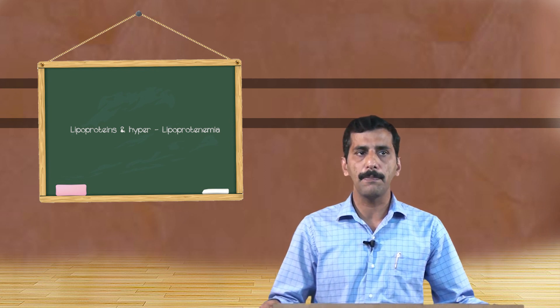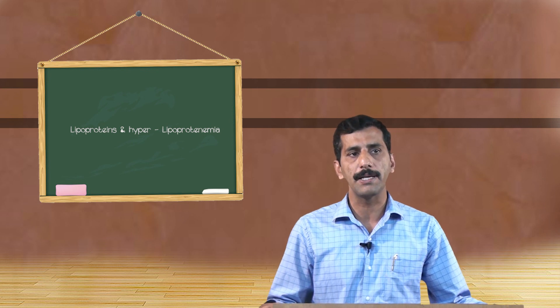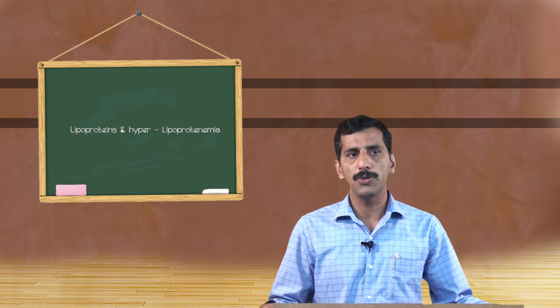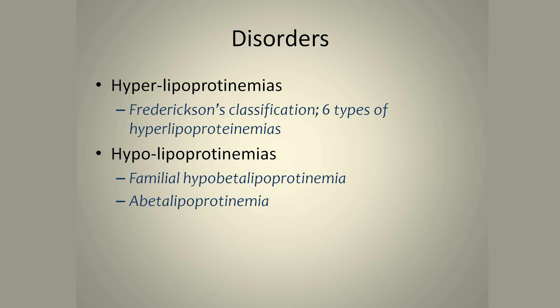In contrast to hyperlipoproteinemia, there is hypolipoproteinemia. There are two different types: familial hypo-beta lipoproteinemia and abetalipoproteinemia. Familial hypo-beta lipoproteinemia is due to the deficiency or decreased production of ApoB, which is required for the formation of LDL. Whereas abetalipoproteinemia is due to total deficiency of the ApoB receptor required for the synthesis of LDL.